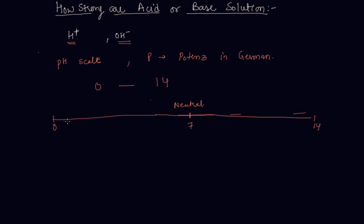And 0 to 7 it is acidic and it is basic here between 7 to 14. So the lesser is the pH means if the pH is 1 let's say the solution is very acidic. And if the pH is 6 less acidic.